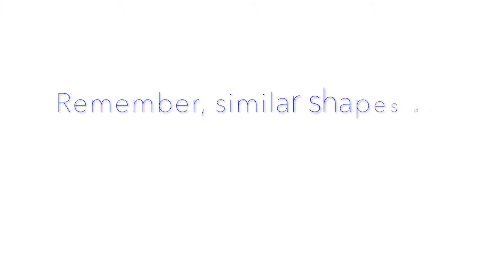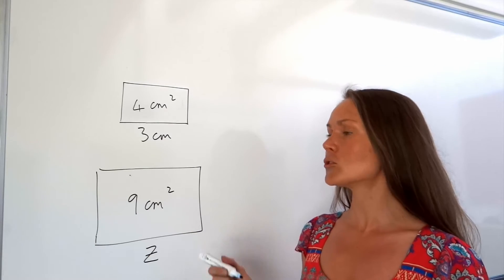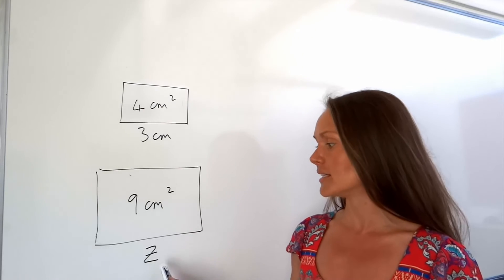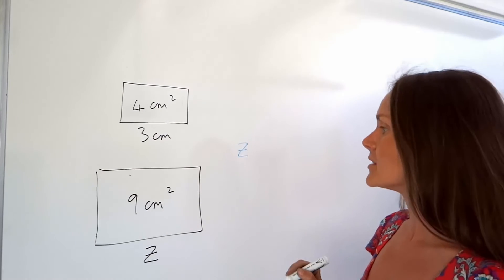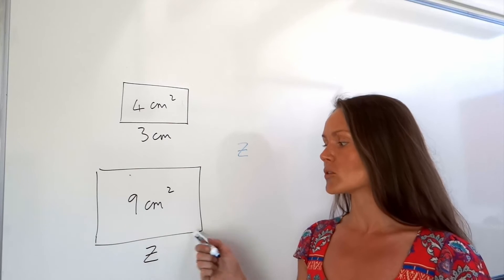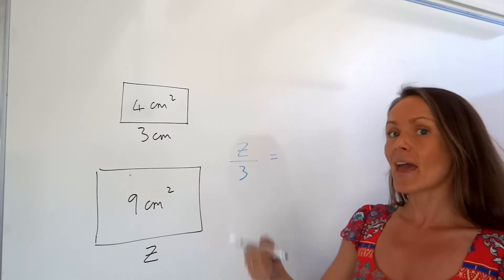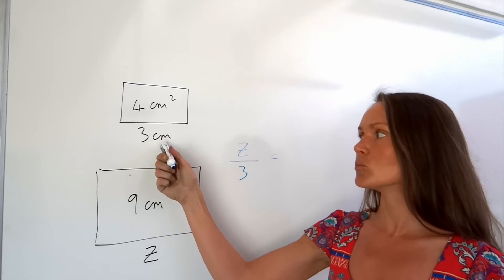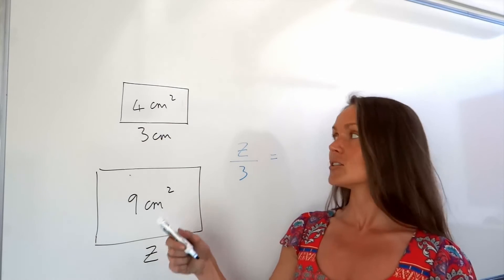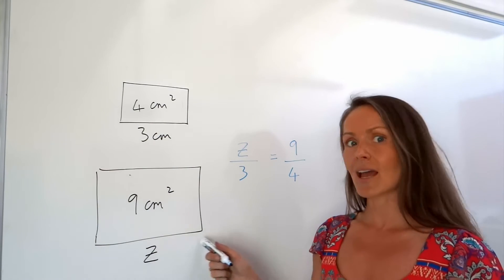On to the next example: I've got two similar rectangles and I've been given both areas. I need to work out the length of Z. As before, start by writing down the unknown — in this case Z — then divide by the corresponding side in the other shape, which is 3. Set that equal to the areas divided by each other: big area over small, so nine on top and four underneath.